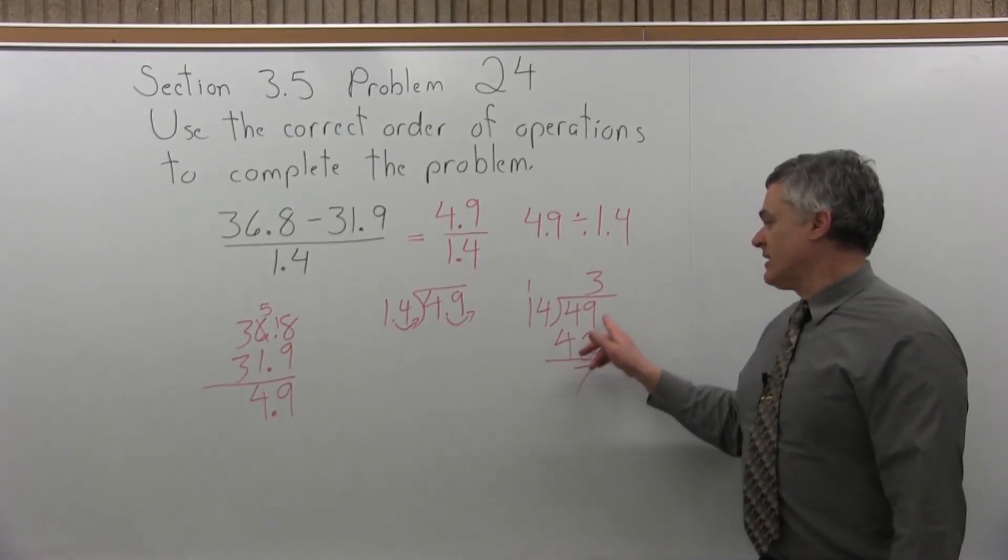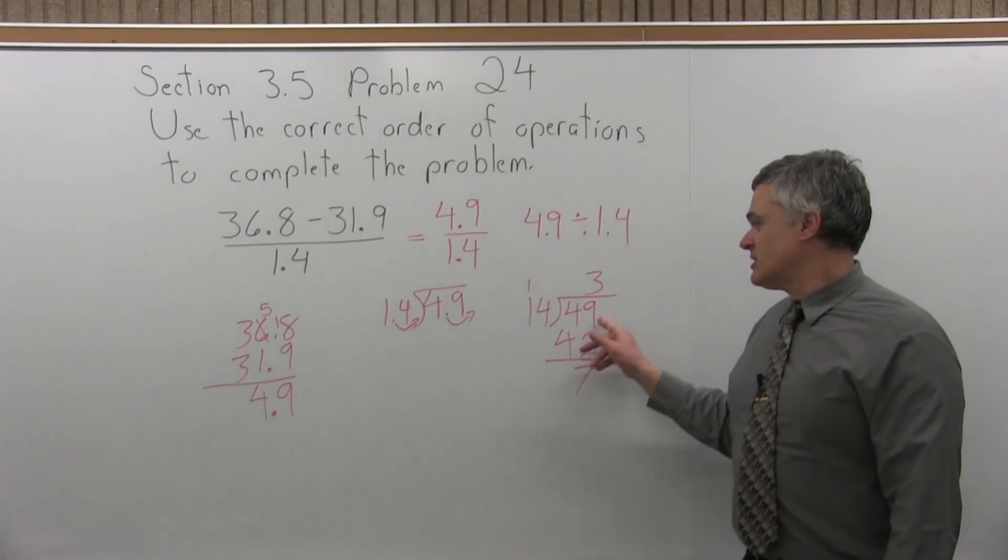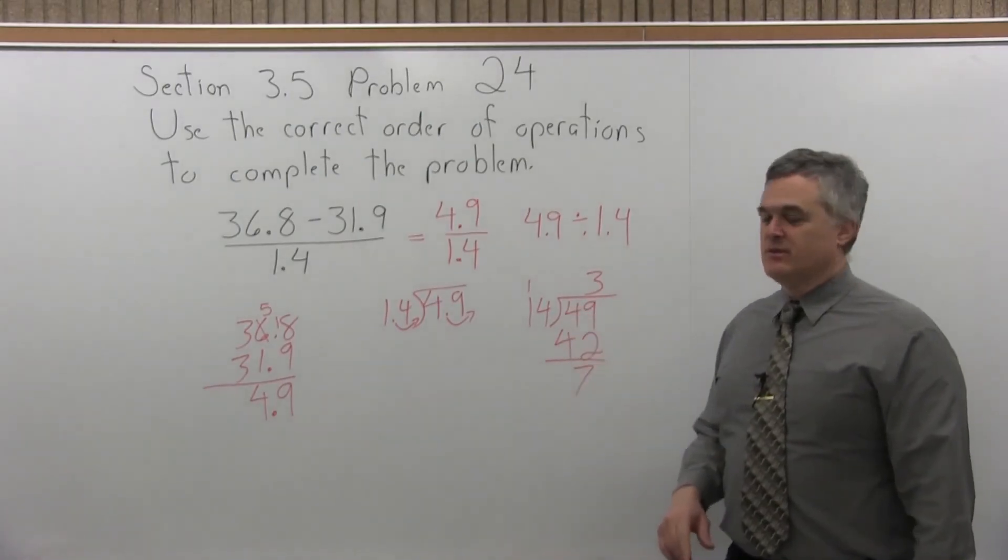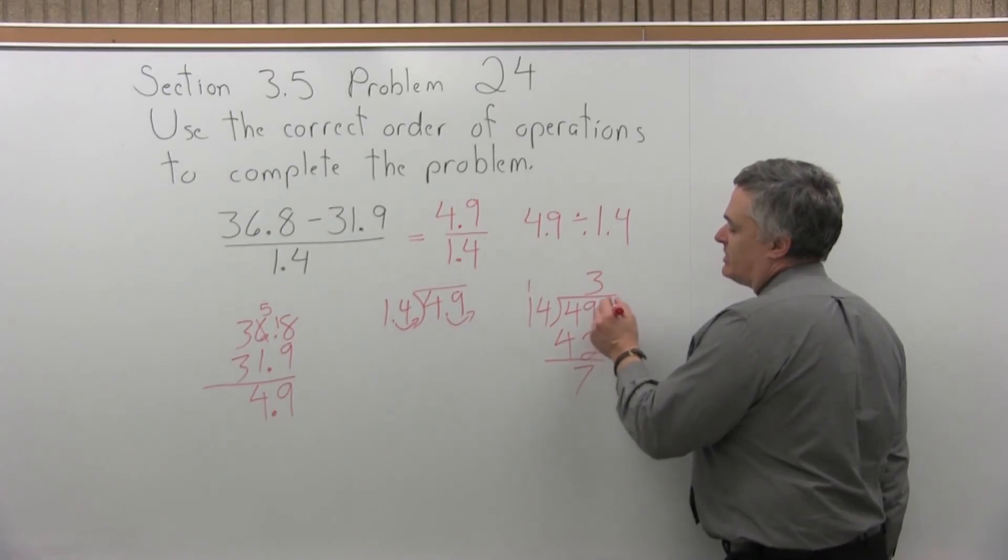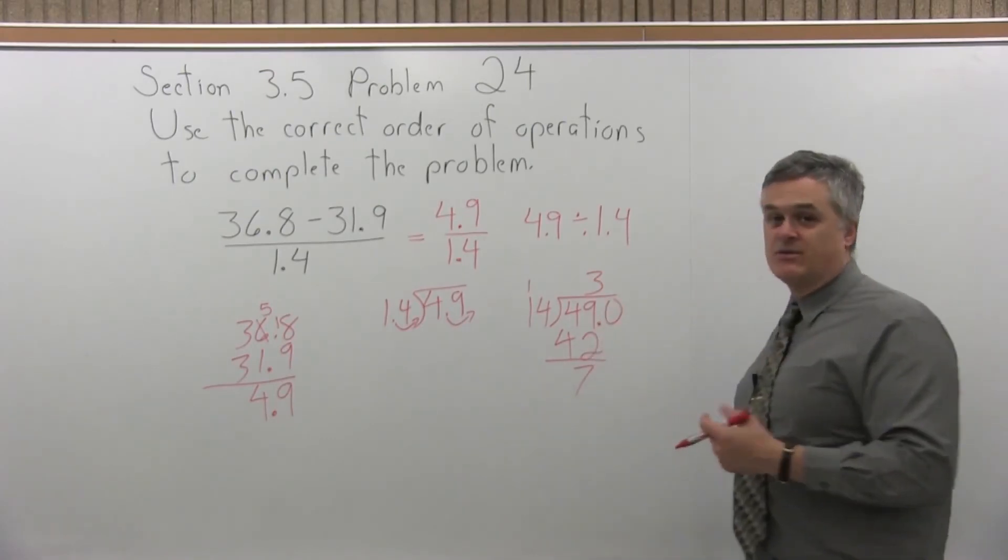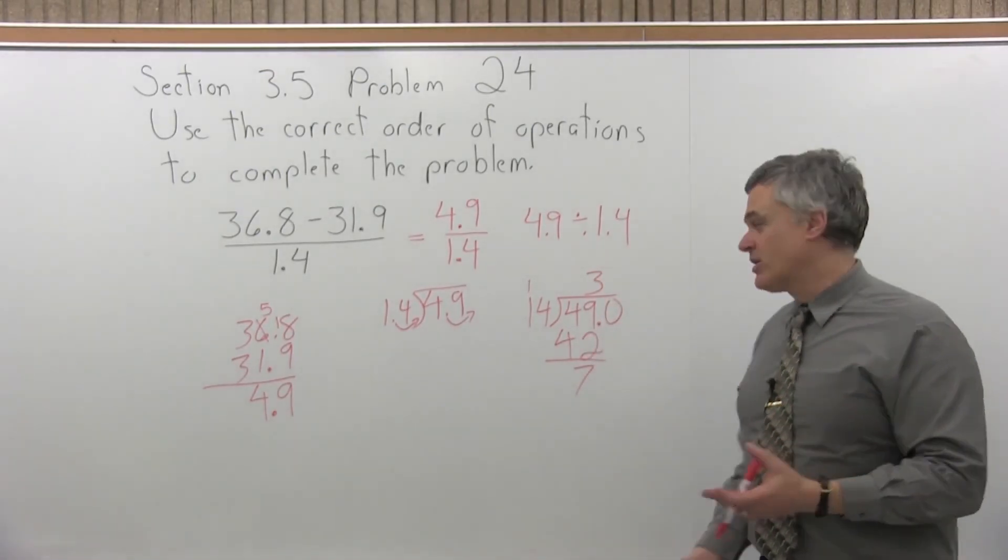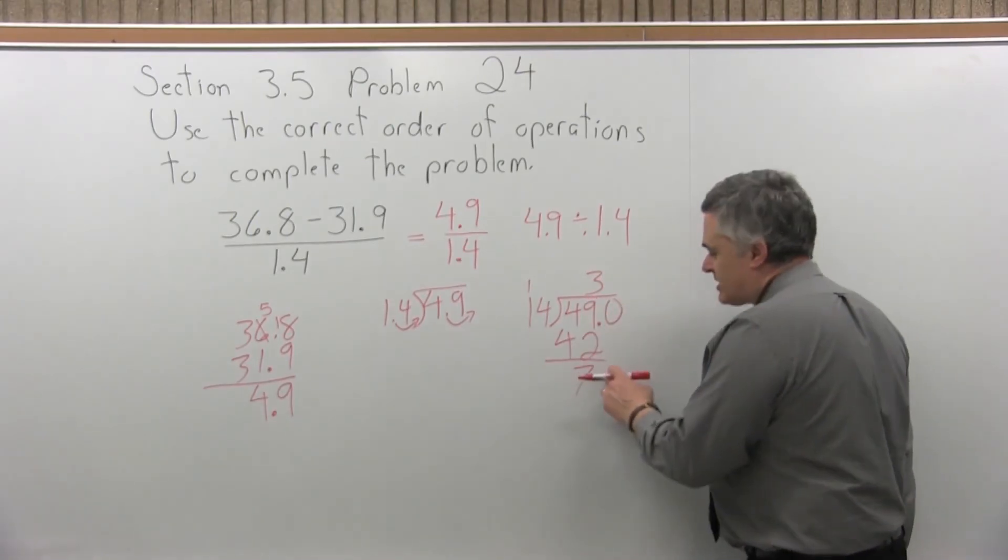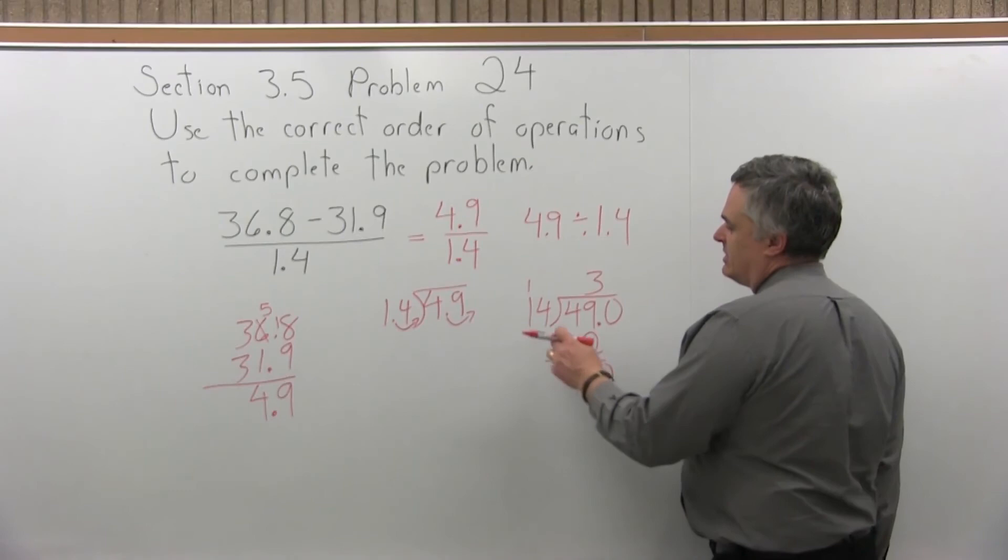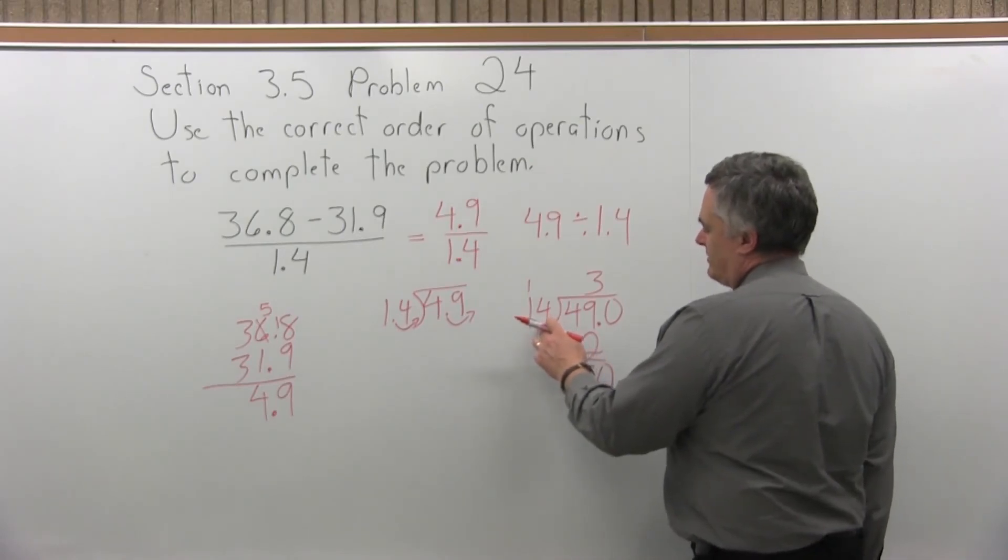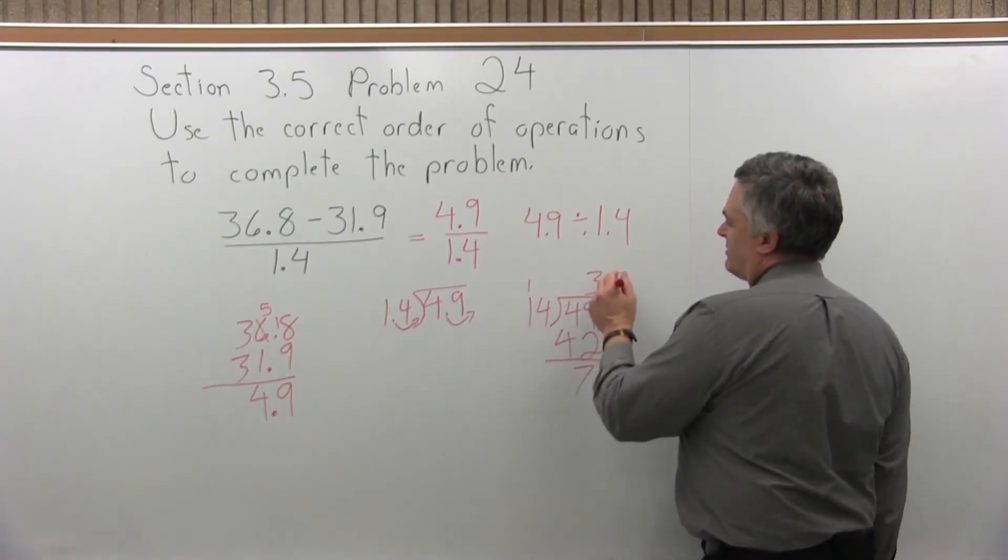Now, it didn't go in evenly and I'm all the way to the end of the digits in the number under the division symbol. So what you do now is you can put a decimal and put a 0 after it. That 0 is there, we just don't usually bother to write it. So now I have a digit to bring straight down. So 70, so 14, 5 should actually make it work.